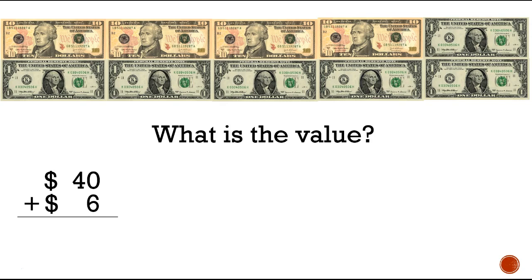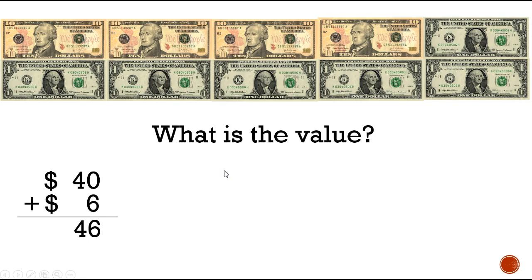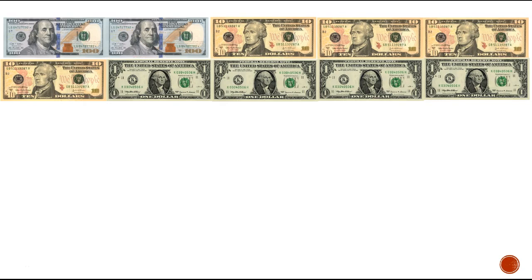Now we need to add these together to find the total value. We have forty plus six. Adding the ones column first: six plus zero is six — good job! We don't have any other tens to add, so we just bring down this four, and we have forty-six dollars as our value. Good job!